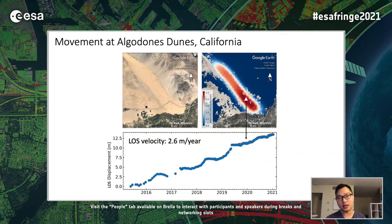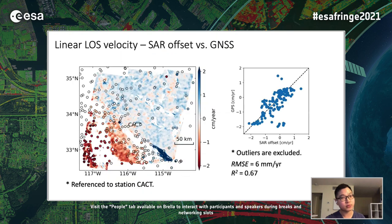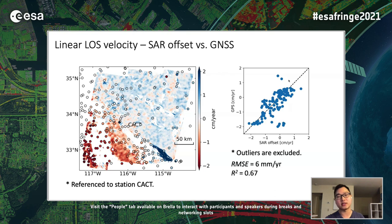The signal from the Point Dume movement on the Algodones Dunes is really large. We compare the SAR offset with GNSS, where both are referenced to the same station. They are very consistent with each other, except for a few outliers. The cross-correlation shows an R-squared of around 67%, with an RMSE of 6 millimeters per year.